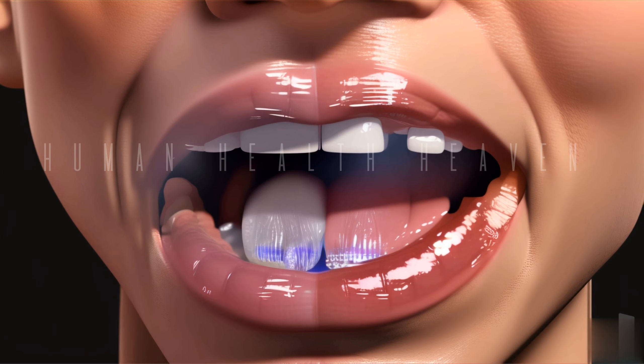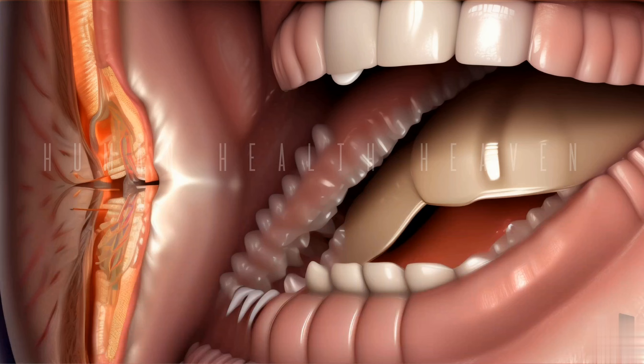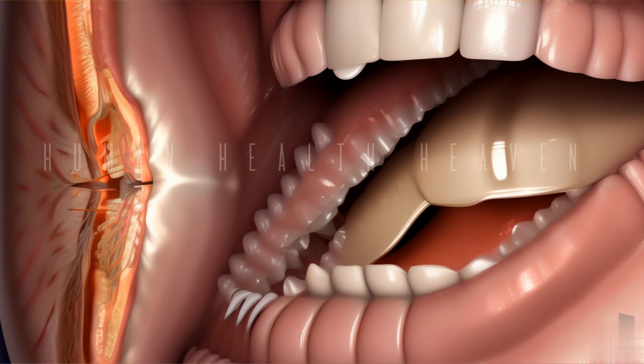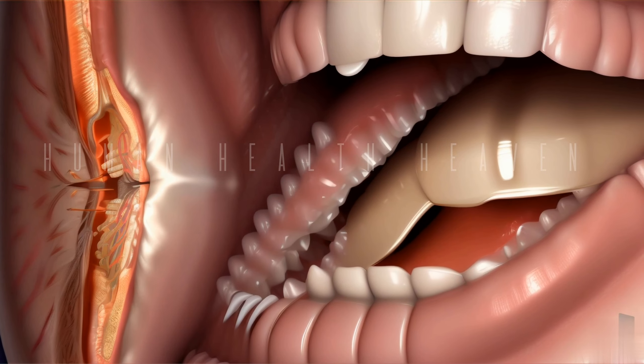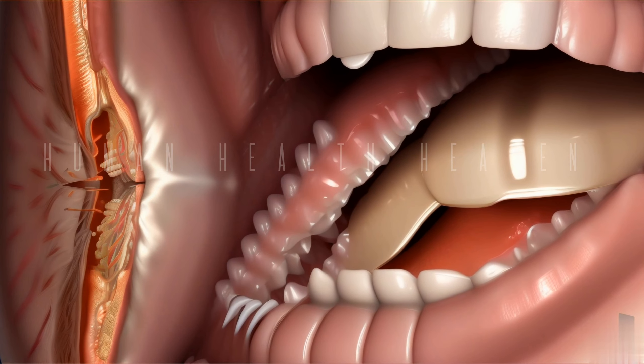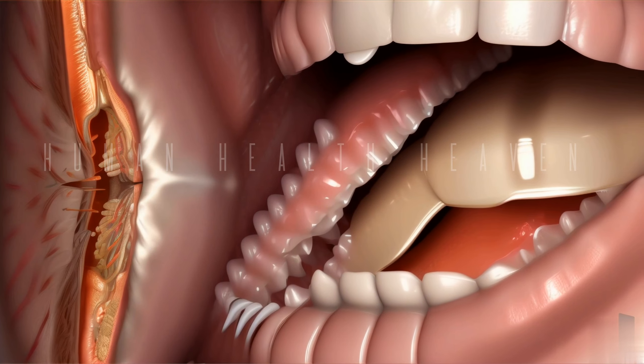sensing taste, speaking, and swallowing. Sticking to the upper surface of the tongue are small organs called papillae, which help in binding the taste of food. These papillae can occur in different parts of the tongue.